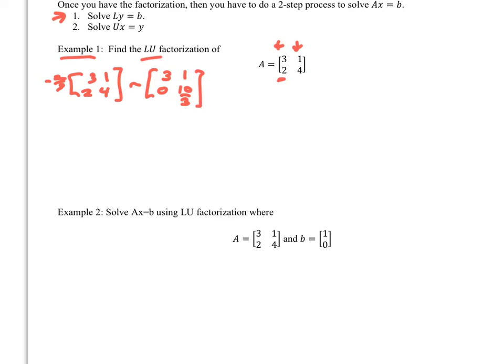Now find L. It's formed using the multiplier we used — but with the inverse sign — placed into the matrix with ones on the diagonal. So we put two-thirds in the lower position. That gives us L = [[1, 0], [2/3, 1]].